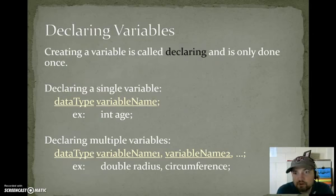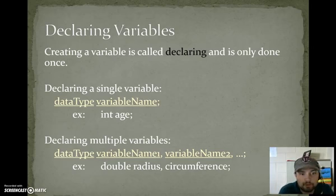Declaring variables. Creating a variable is called declaring and it is done once. Once you declare a variable, it exists from that point on in your program. The format for declaring a single variable is data type space variable name semicolon. Example: int would be our data type. The name of our container or variable would be called age, and we have to put a semicolon behind that.